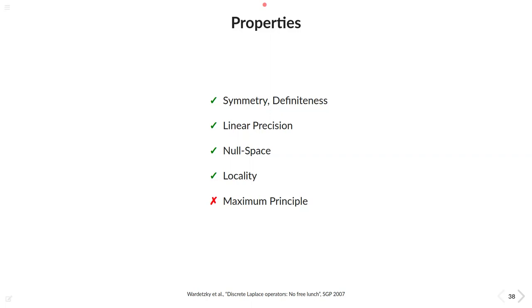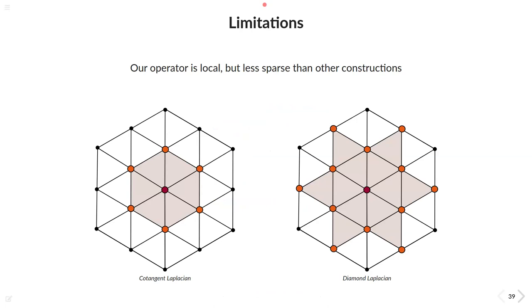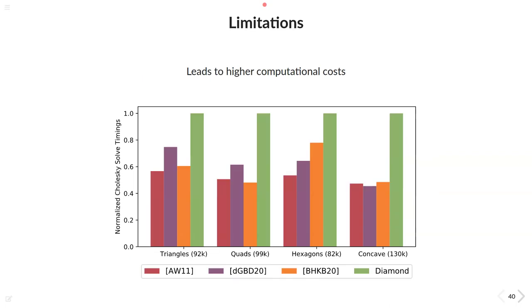But still we also have to face some limitations our method has to deal with. Because while still remaining a local operator the relevant neighborhood for a single vertex extends the one ring neighborhood as for example needed in the cotangent formula and therefore leads to a denser matrix pattern than other discretizations have. This is caused by the prolongation of the dual vertices and actually leads to higher computational cost since the factorization and the solving of the system matrix simply takes more time.